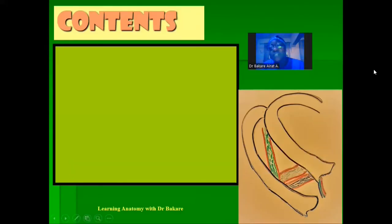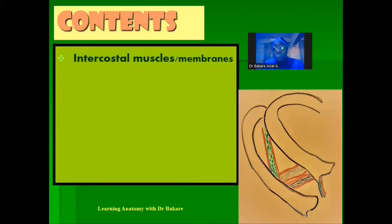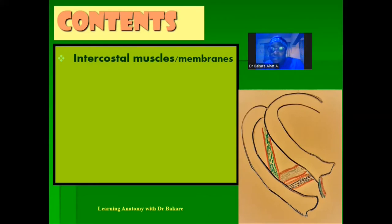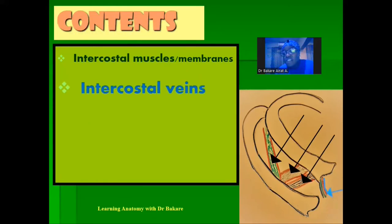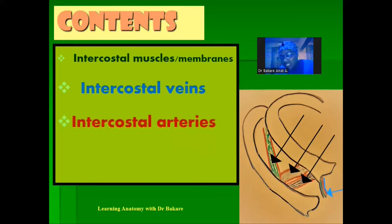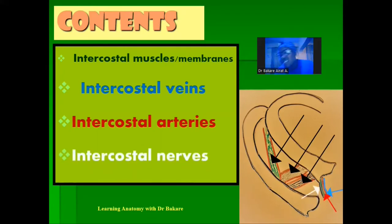The intercostal spaces contain a number of structures. These include the intercostal muscles and intercostal membranes. We also have the intercostal vessels: the intercostal vein — seen most superiorly — and the intercostal artery, just inferior to the vein. Finally, we have the intercostal nerve, seen most inferiorly. These are the structures found within the intercostal spaces.